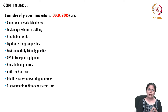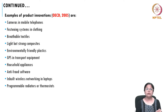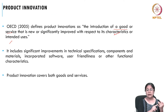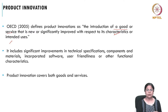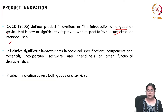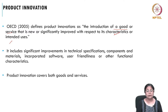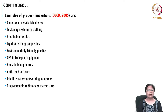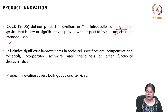This gives a fairly decent idea of what we mean by product innovation. Let us revisit the definition in light of these examples. It is the introduction of a good or service improved with respect to its characteristics or intended use. For instance, the camera in the mobile telephone changed the characteristics of the phone — its intended use, earlier limited to calling, is now extended to clicking pictures. Environmentally friendly plastic changes the material's technical specification. Anti-fraud software is an example of incorporating new software.